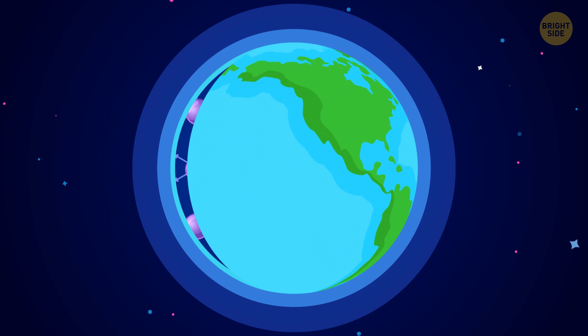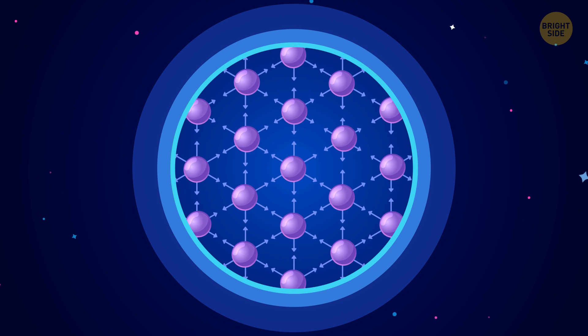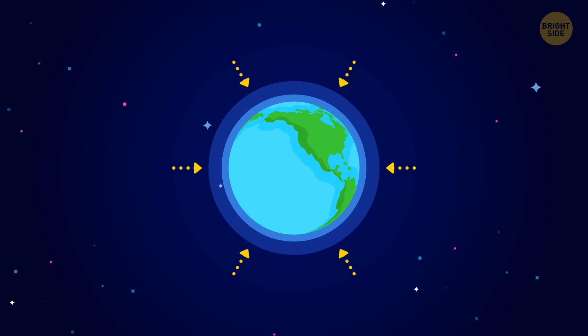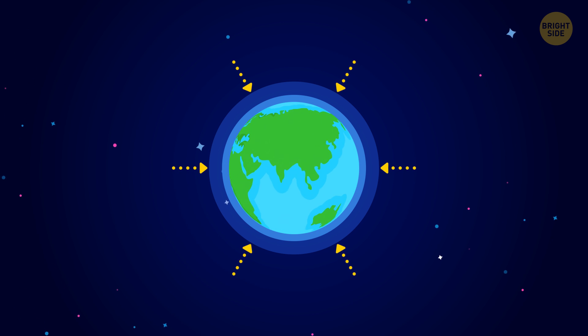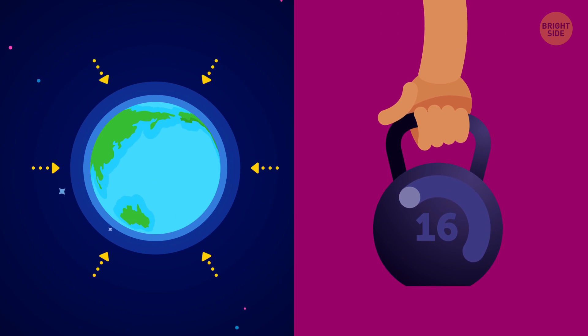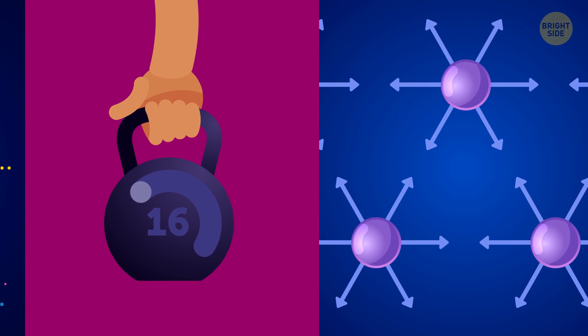But let's take the Earth. Our planet is a big, big number of atoms crammed together. That's why its gravitational pull is very real and very perceptible. In other words, gravity depends on the mass, which is in turn related to the matter.